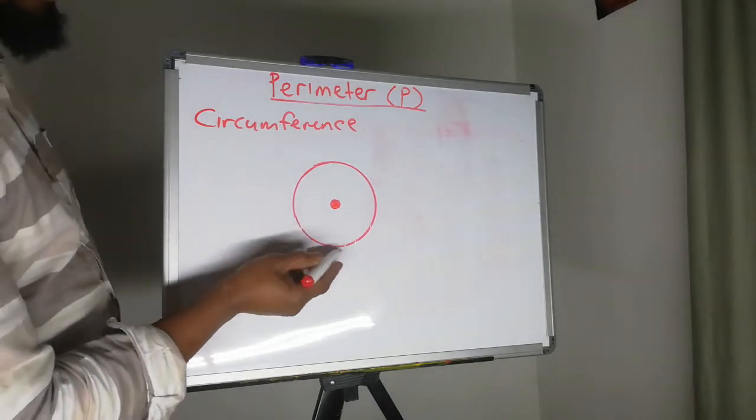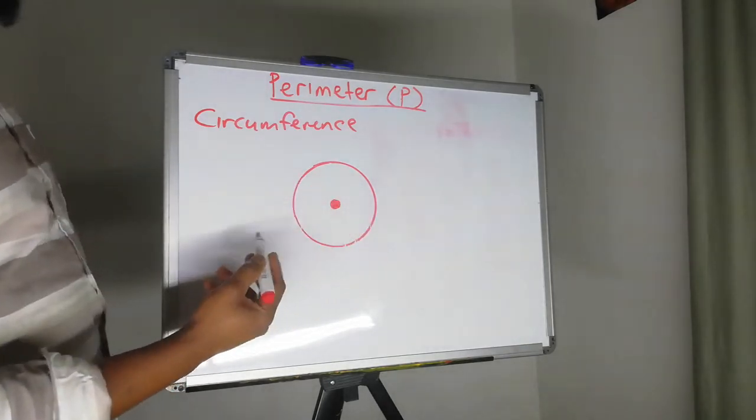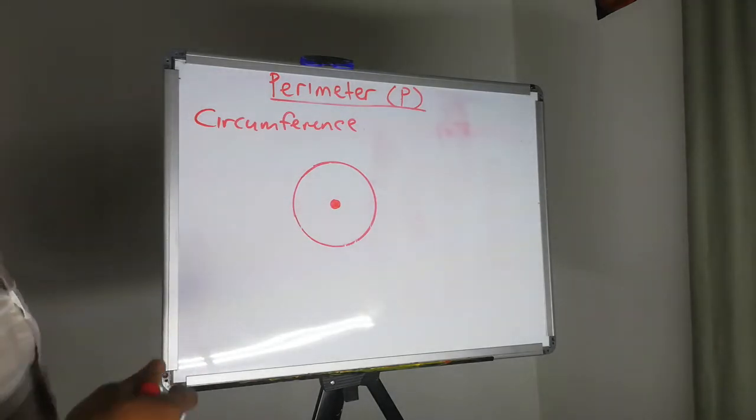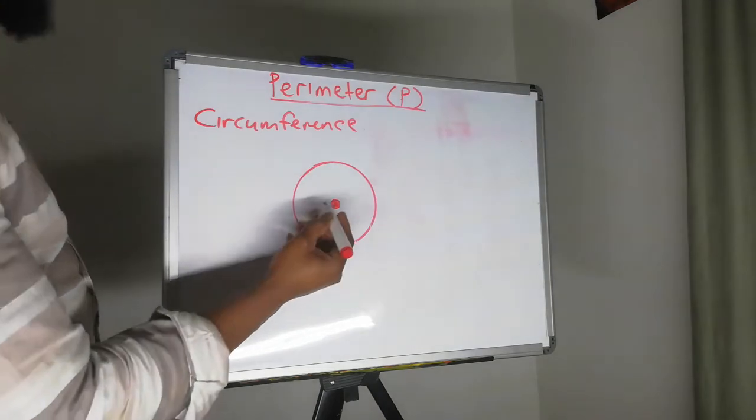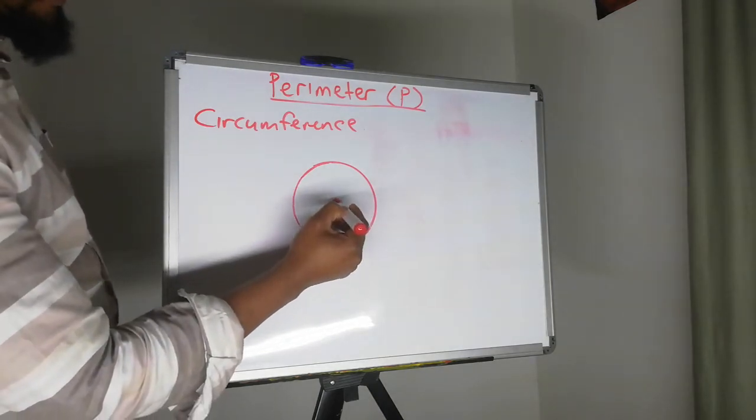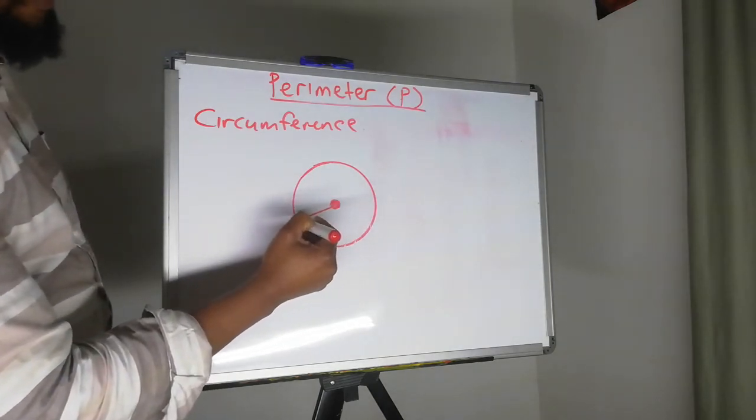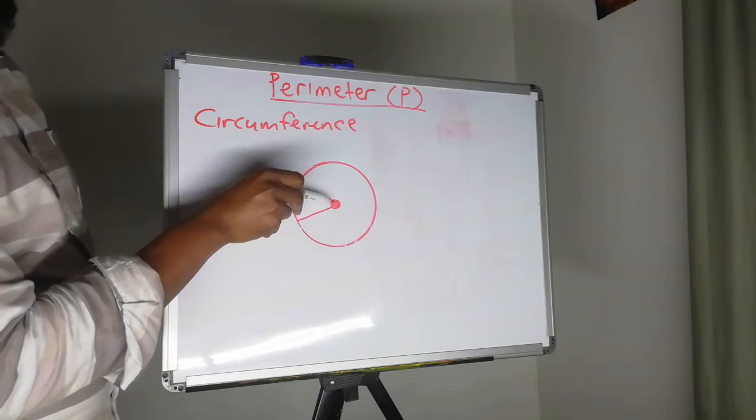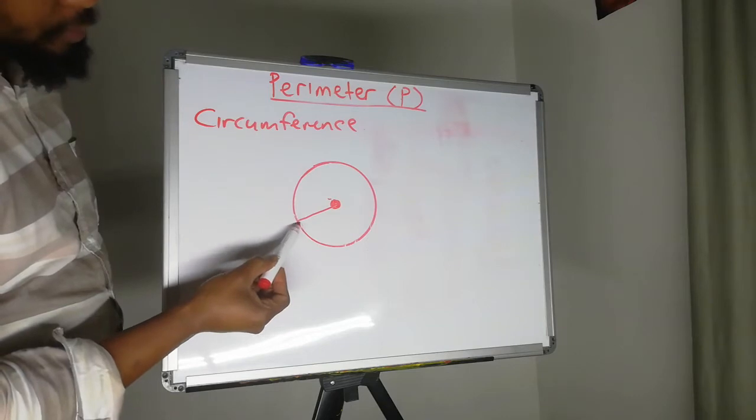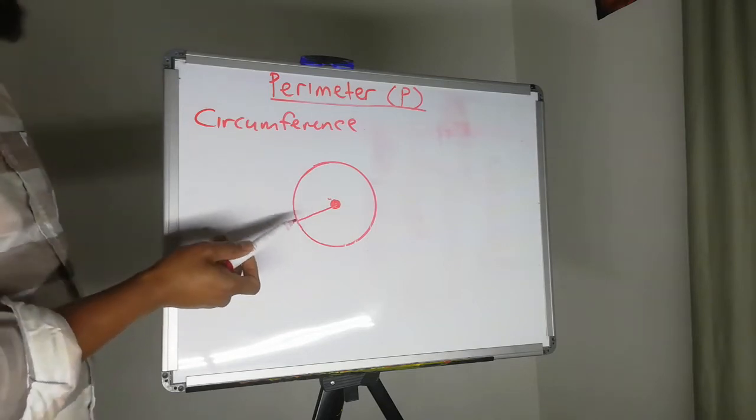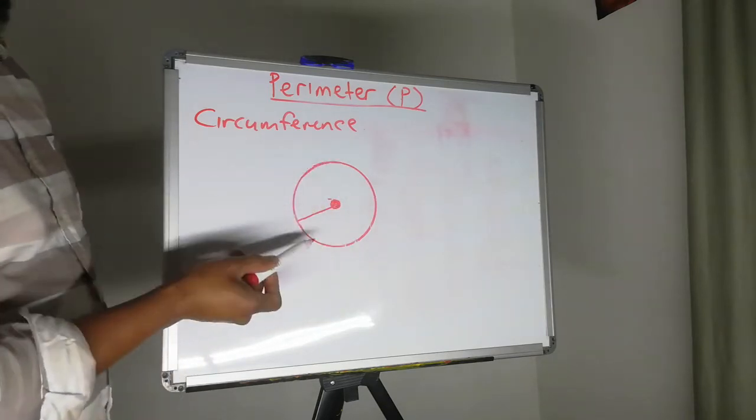As you can see, there is no starting point or end point. So it is rather difficult for us to determine where the circle starts and where the circle ends. However, we make use of the distance line from the middle. So this is the middle point of our circle. And we go to the outer border of the circle, which is the line that we see here.